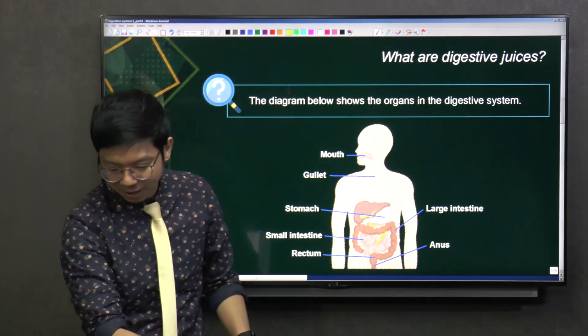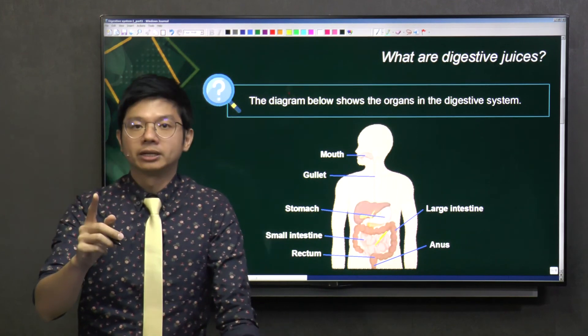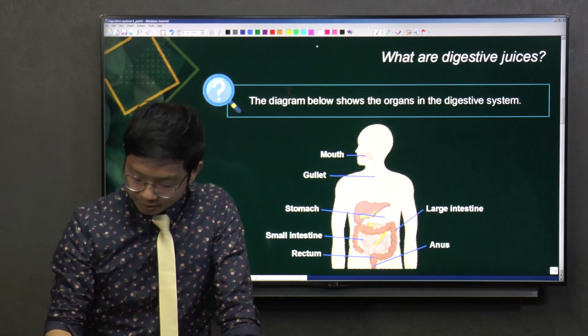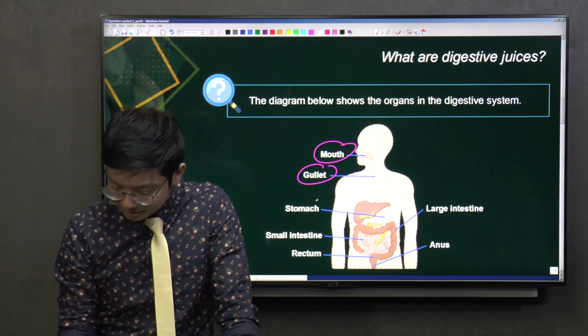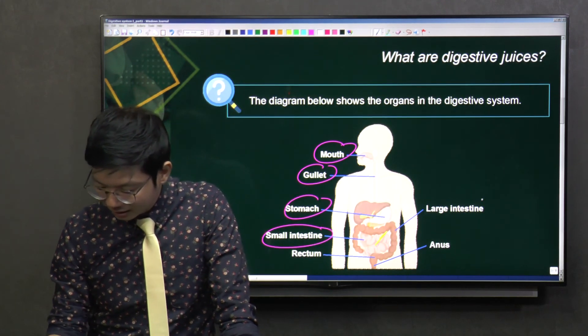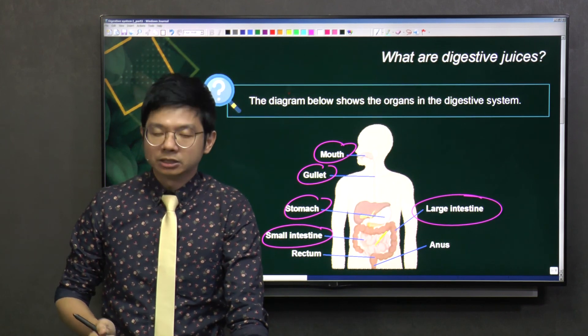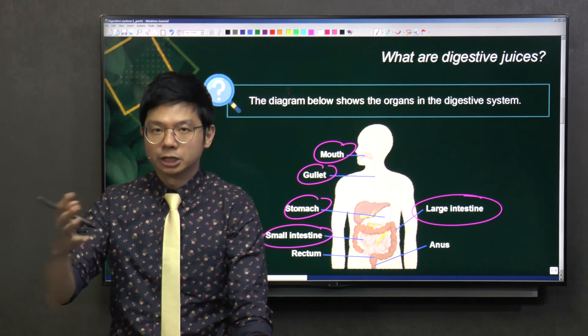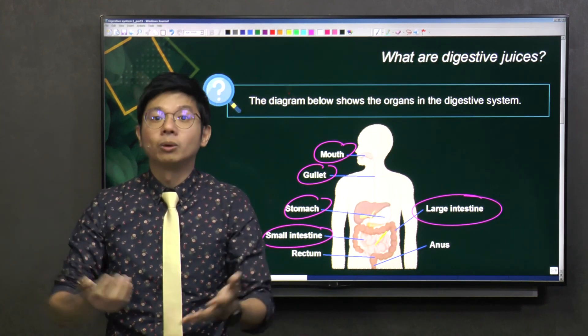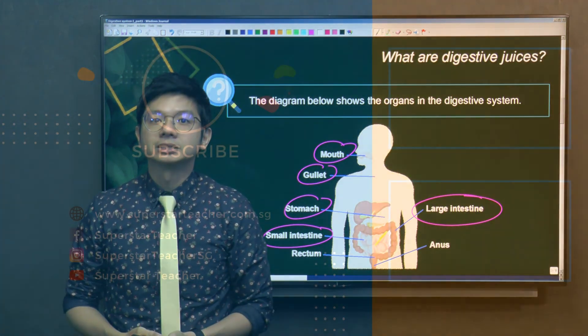What are the parts that are required in P4 and for PSLE? Mouth, gullet, stomach, small intestine, large intestine. Rectum and anus are not in the syllabus, but some schools teach it. I think it's good to know their functions and how to label them.